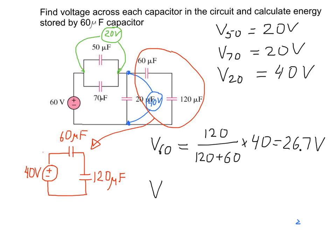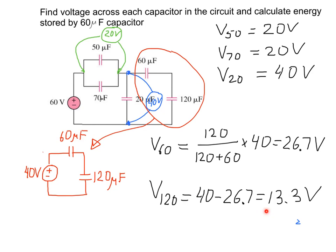The voltage across the 120 microfarad capacitor is found by subtracting: 40 minus 26.7, which gives 13.3 volts. To summarize: we found the voltage across the 50 microfarad capacitor, the 70 microfarad capacitor, the 20 microfarad capacitor, the 60 microfarad capacitor, and the 120 microfarad capacitor. That completes all the voltages.